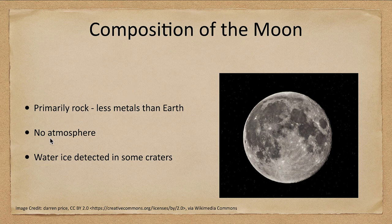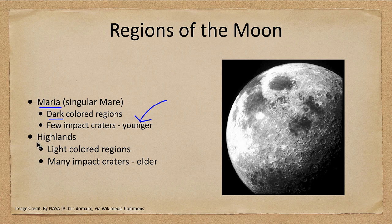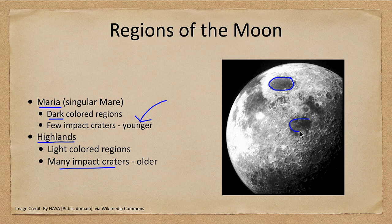The moon is divided into two distinct areas. The maria are the darker regions with few impact craters — fewer craters means they are younger regions. Looking at the maria in images, you can see hardly any cratering at all.